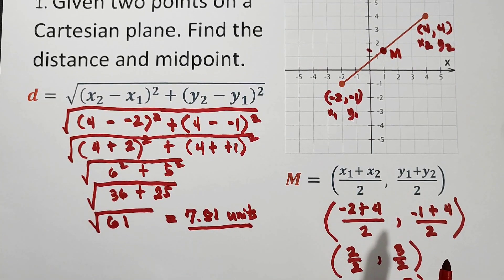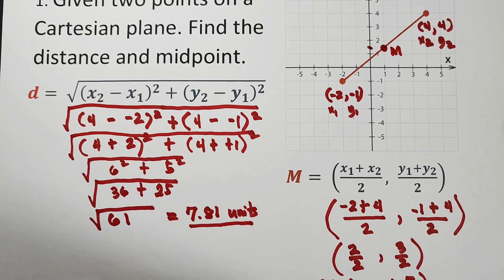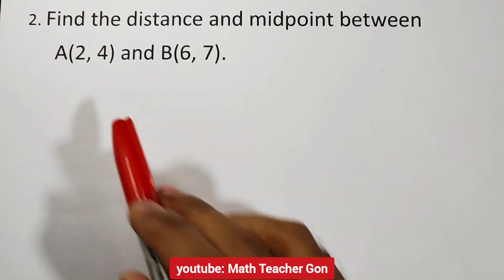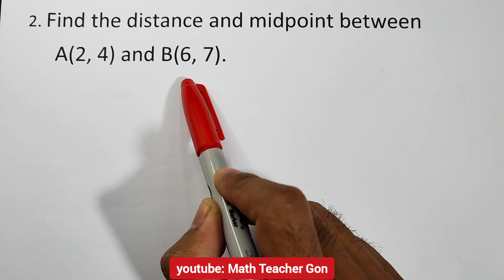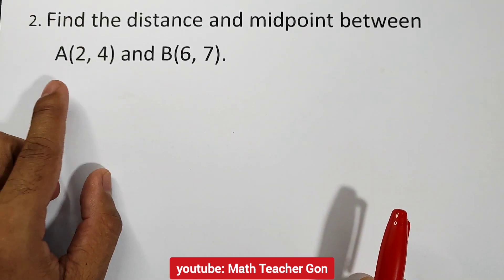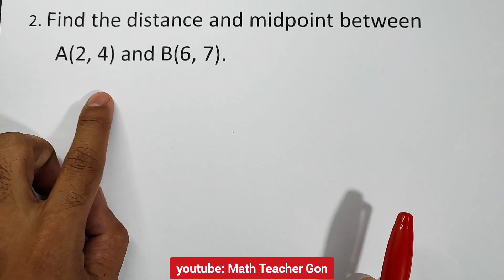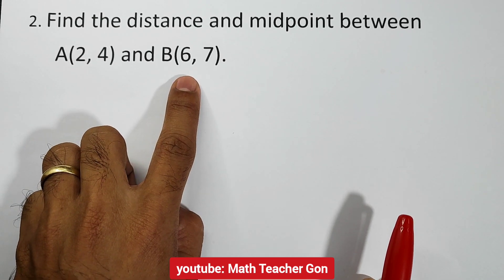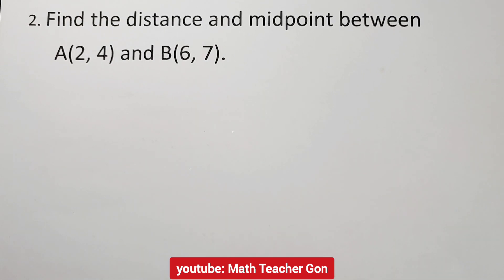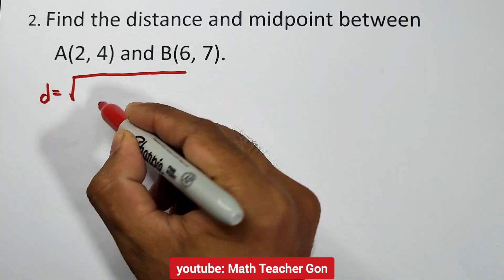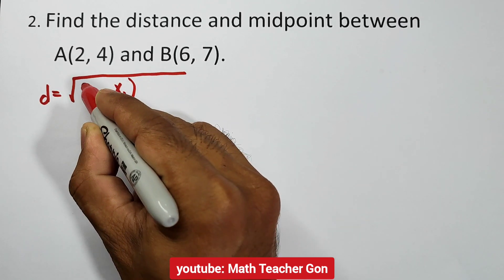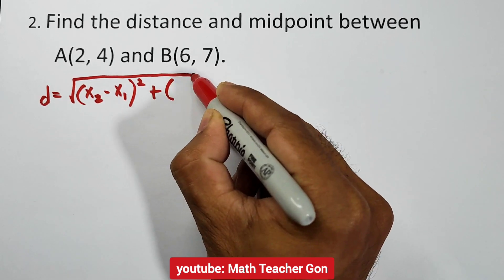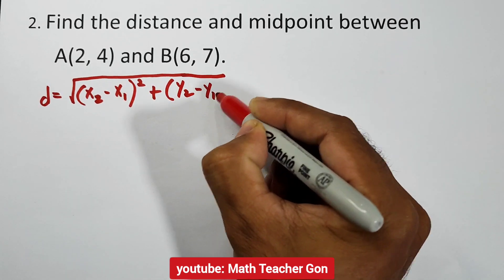Now let us have example number 2. Find the distance and midpoint between point A, which is (2, 4), and point B, which is (6, 7). The coordinates of point A are (2, 4) and the coordinates of point B are (6, 7). We use the formula: D is equal to the square root of x_sub2 minus x_sub1 squared plus the quantity y_sub2 minus y_sub1 squared.